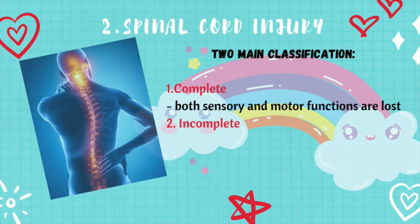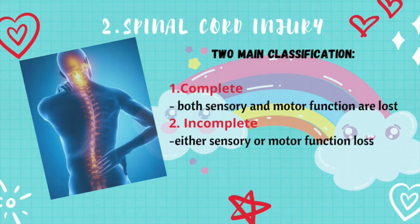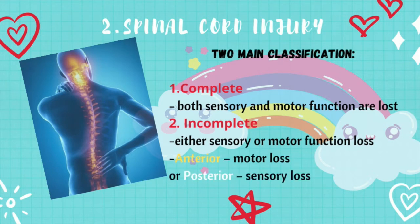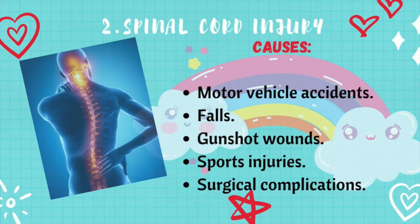There will also be erectile dysfunction and bowel or bladder problems. For incomplete spinal cord injury, either sensory or motor functions are lost. If you have some motor or sensory function below the affected area, the injury is called incomplete. There are varying degrees of incomplete injury because we have the anterior part for motor functions and the posterior part for sensory functions. If the anterior part is affected, there will be motor loss but sensory is still intact. If the posterior part is affected, there will be sensory loss but motor function is still intact.